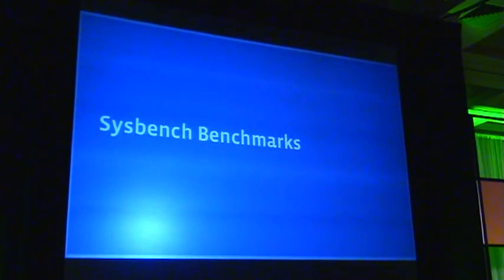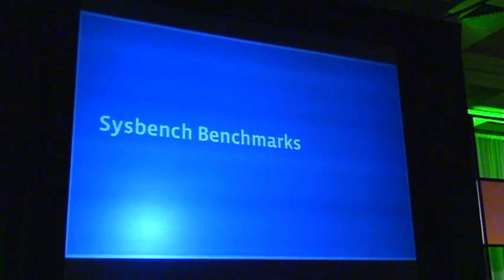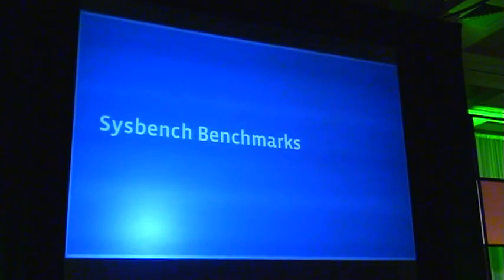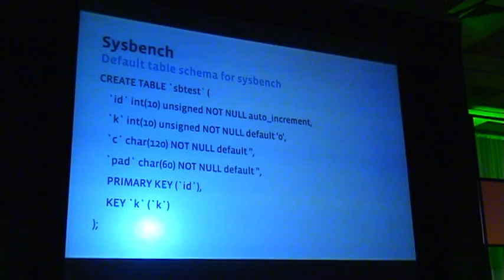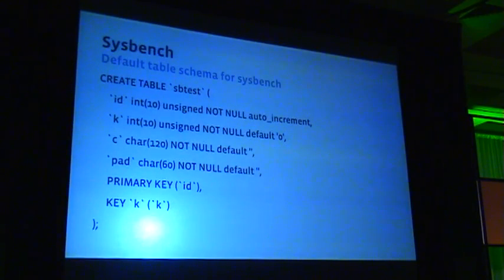To illustrate the shortcomings of the current InnoDB compression implementation, I'll go through a Sysbench benchmark. I chose Sysbench because it's a common framework, but you could produce similar results with other benchmarks. This is the default Sysbench table schema. One thing to note is that it has two string columns — one 120 characters long and the other 60 characters long. Without even looking at the data, one can say with high probability that this table should be compressible, because it has two string columns.